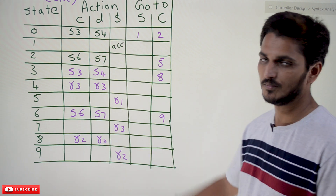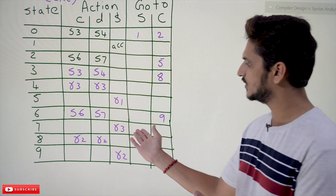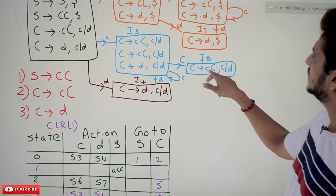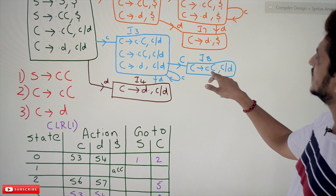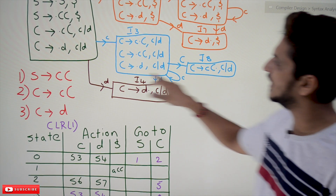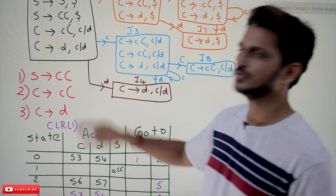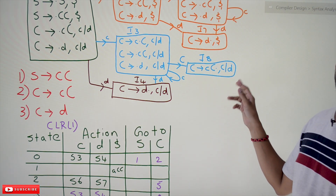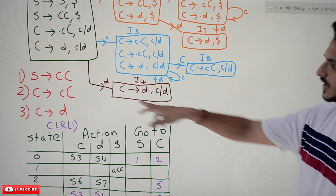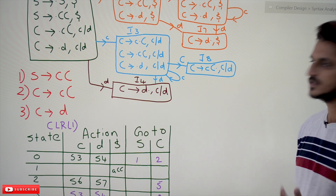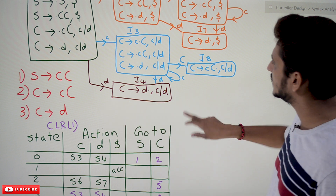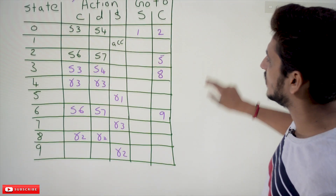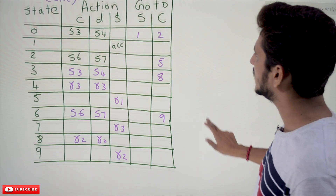For states i7, i8, and i9 — all are completed states so we do reduce actions based on the production. For i8: C tends to small c capital C — this is completed, it reduces to production 2. We write the reduce action at the corresponding lookahead symbols. This is how we construct the canonical CLR(1) table.